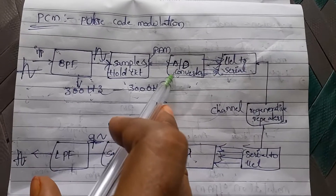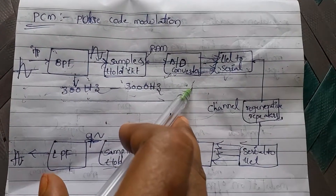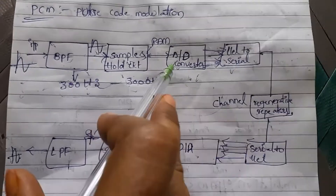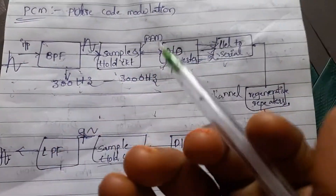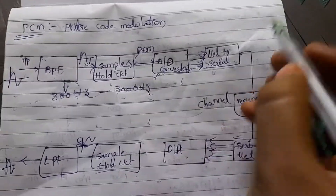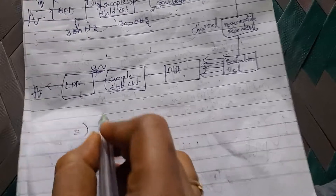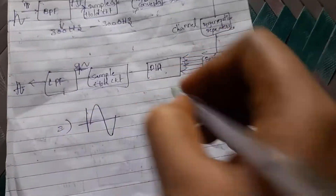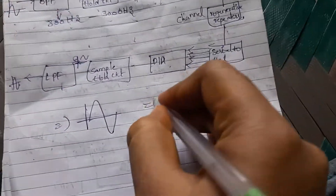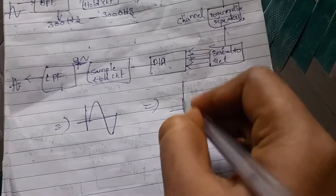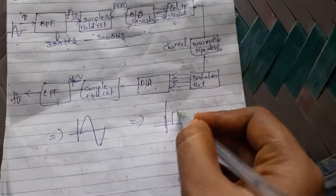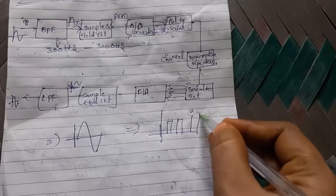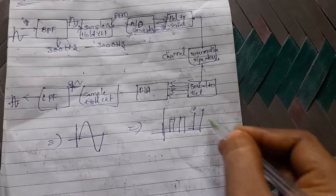The ADC converts the analog signal into a digital signal. The main difference between analog and digital: analog signals are continuous, while digital signals appear as pulses or sequential lines — represented in the form of binary numbers (zeros and ones).